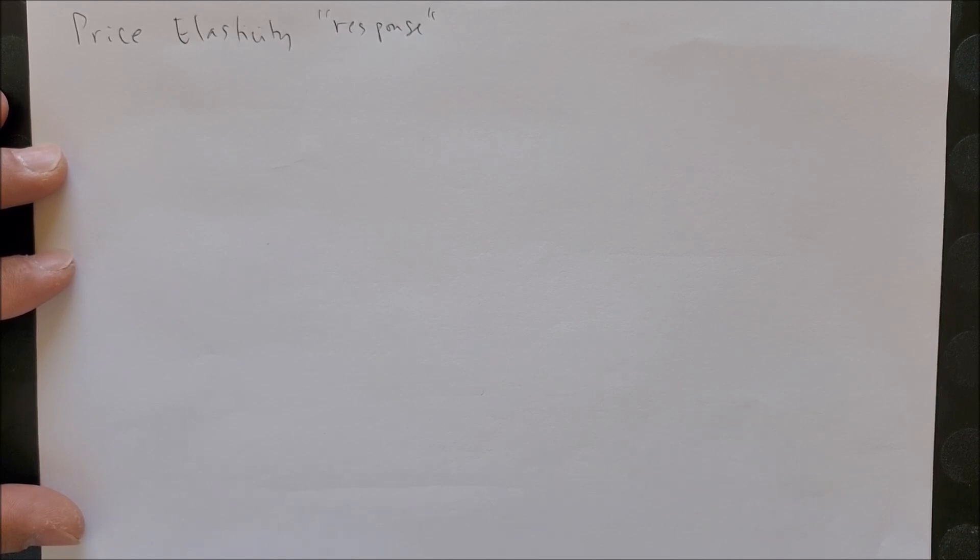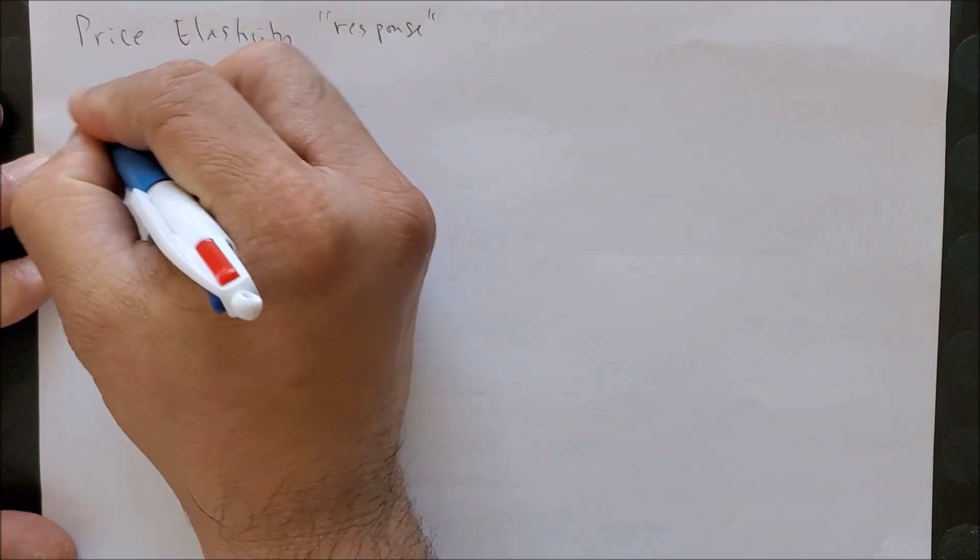When there is a price change, you can see that we are able to measure: when will you consume more when there is a price decrease, when will you consume less when there's a price increase. We can denote price elasticity as big E sub p.